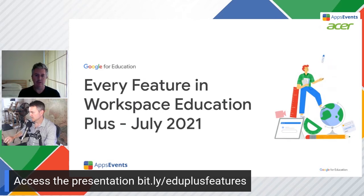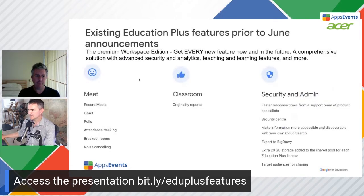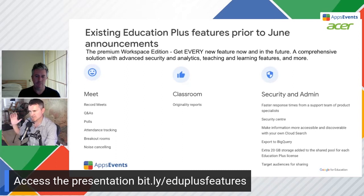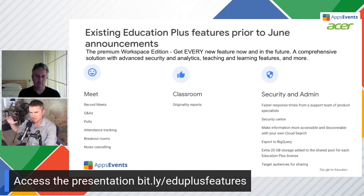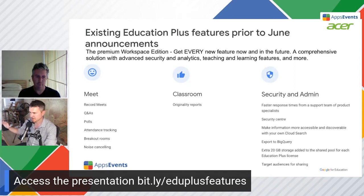So importantly, Education Plus is a premium Workspace edition. It's $5 per student per year, or four euros, with pricing in a bunch of currencies. With this edition you get everything — all the teaching and learning stuff, all the security and admin stuff, all the Meet and Classroom features. This is a comprehensive solution. And it's important to know that because everything new coming in Workspace — and there's a lot of new features coming — some of them are only coming to Education Plus. So if you have this version, you're guaranteed to get every top-of-the-range feature in Workspace.